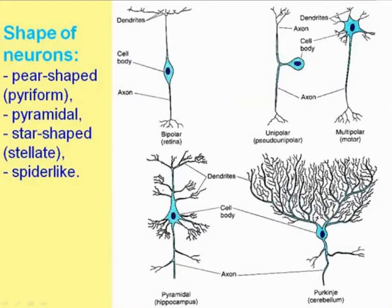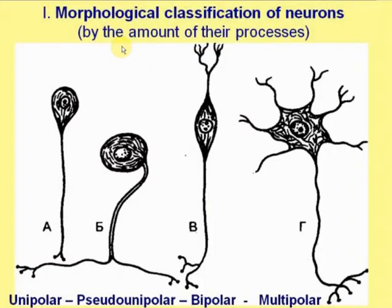Neurons vary in shape — there are up to 80 types of neurons based on their shape. There are pear-shaped piriform neurons, pyramidal neurons with axon and dendrites, stellate and spindle-like neurons. Another morphological classification of neurons is classification by the amount of processes.